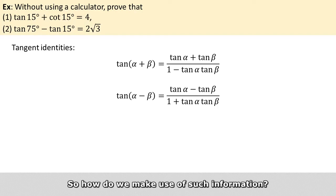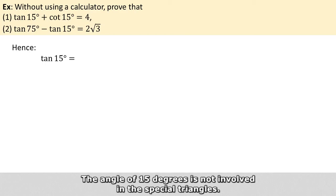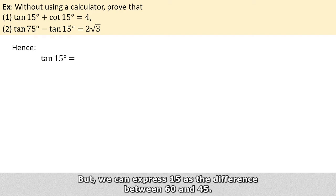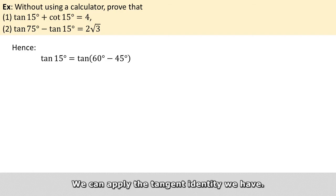So how do we make use of such information? The angle of 15 degrees is not involved in the special triangles, but we can express 15 as the difference between 60 and 45. We can apply the tangent identity we have.